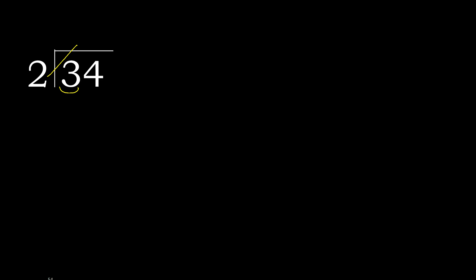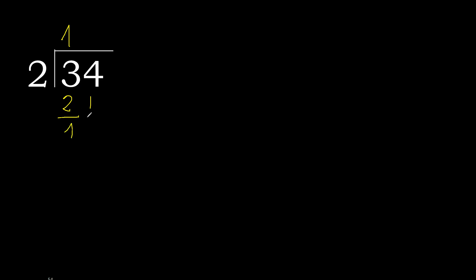2 multiplied by 2 is 4 — 4 is greater, so multiply by 1. 2 multiplied by 1 is 2, which is not greater. 3 minus 2 is 1.